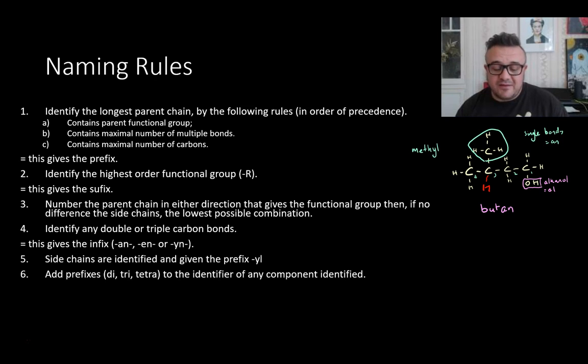Then we add our prefixes. Di, tri, tetra, to identify the identifier of any component identified. That means if we had two alcohols, this would be a diol. If we had two methyl groups, it would be a dimethyl. At the moment, we don't, so it's actually trickier. Because we don't include any modifiers in the front. So it's just a methyl.